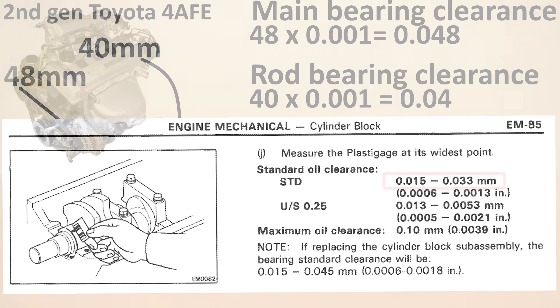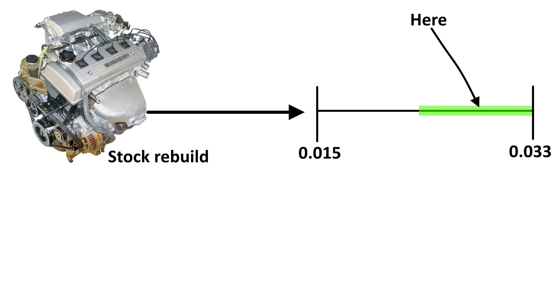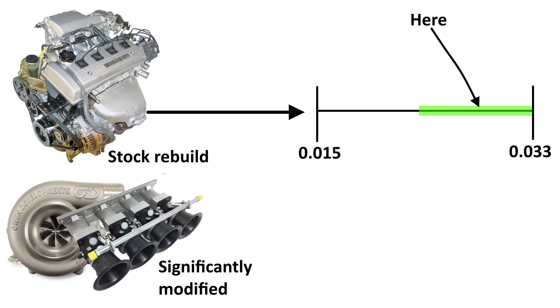But for now, what I can tell you is that if I were to rebuild this engine in its stock form, I would aim for somewhere around the middle or top half of what the factory service manual recommends. But if I were to rebuild this engine in a significantly modified form, for example by adding forced induction or increasing the redline by a few thousand RPM, I would aim for the rule of thumb clearance.